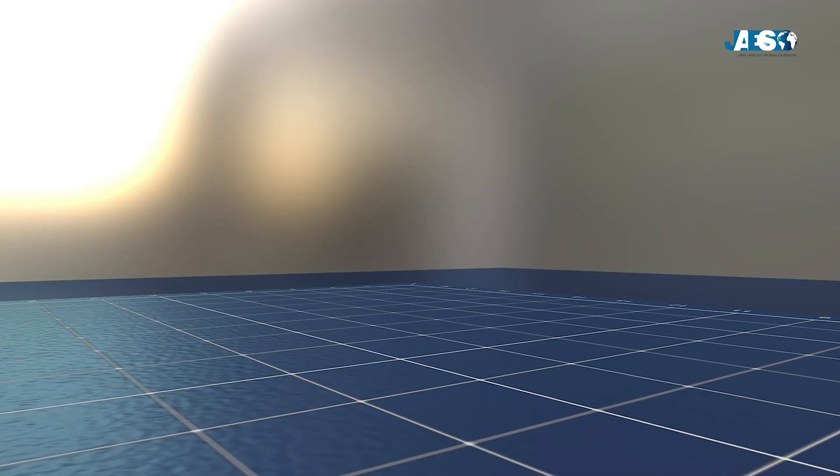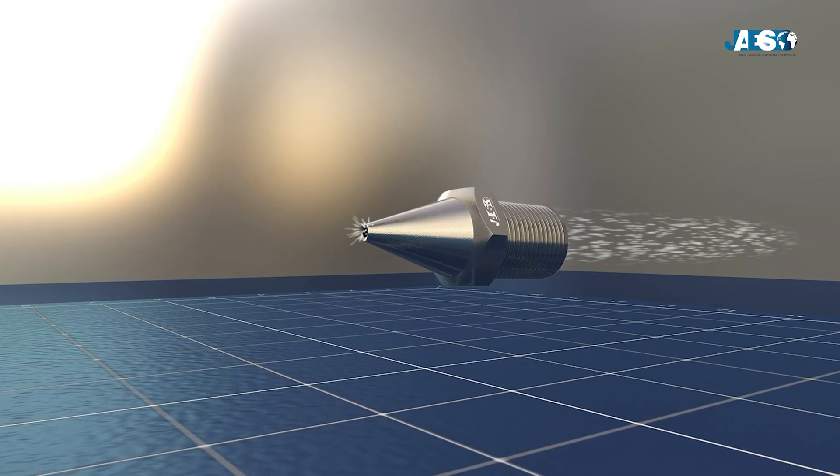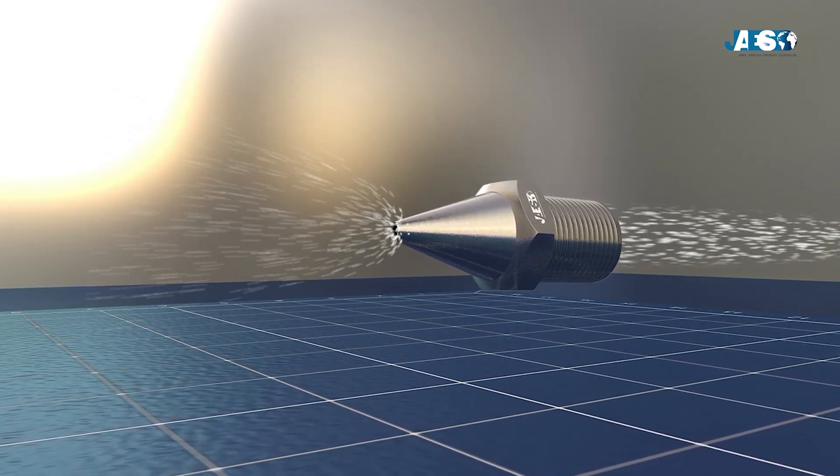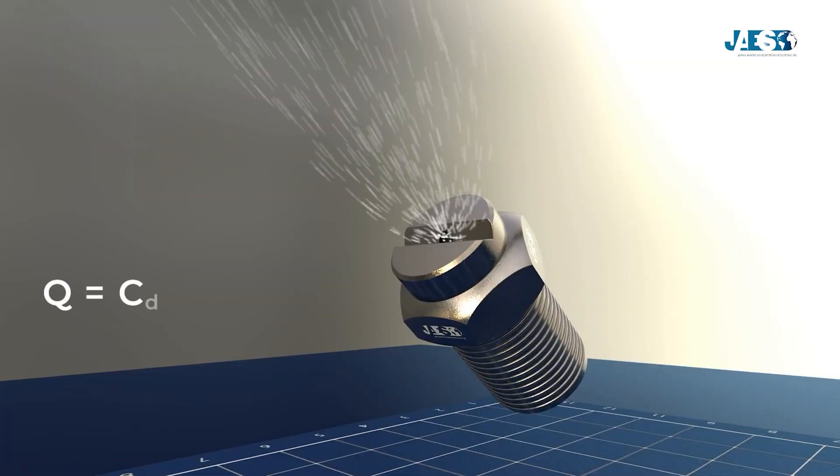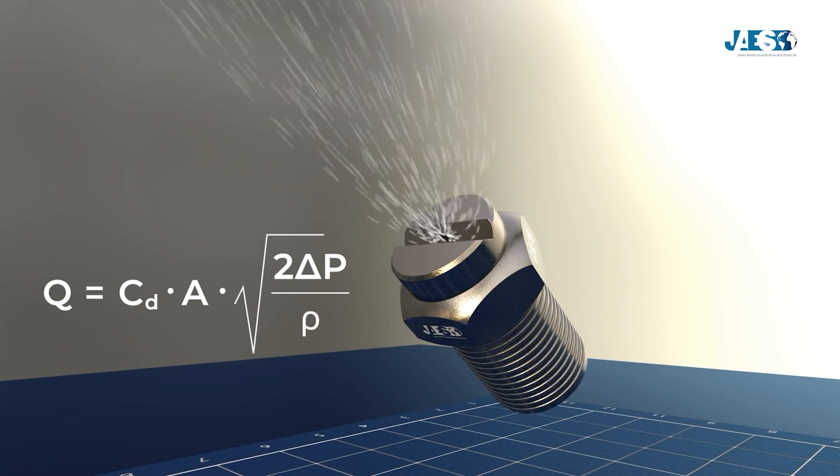The nozzle's principle relies on accelerating fluid through a precisely sized orifice. This equation shows that the flow rate depends proportionally on the area of the orifice and the square root of the pressure.